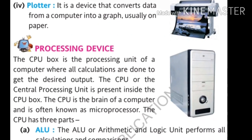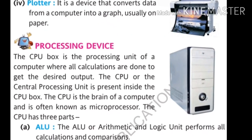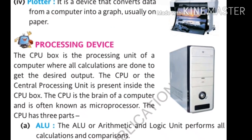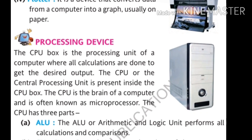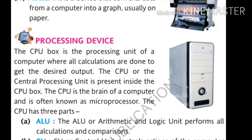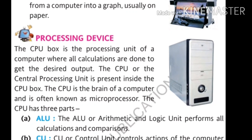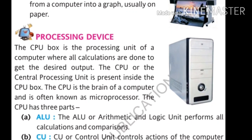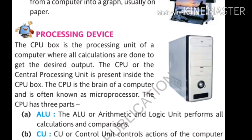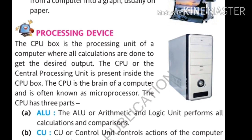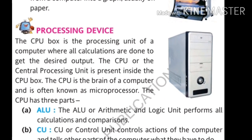The next type of output device is the plotter. It is a device that converts data from a computer into a graph, usually on paper. Plotter is also a type of printer, but it converts data into a graph. A regular printer does not convert data into a graph, but a plotter can.